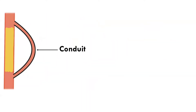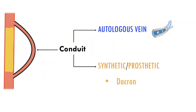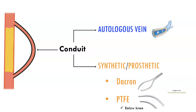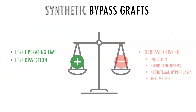The conduit or graft material used to create the bypass can be the patient's own vein, or synthetic materials like Dacron or PTFE. Dacron is a knitted or woven polyester material. PTFE is short for polytetrafluoroethylene, also known as Teflon. PTFE can be used below the knee, while Dacron is not. While synthetic grafts are readily available and avoid the extensive dissection needed to harvest a vein, they have an increased risk of infection, anastomotic pseudoaneurysms, neo-intimal hyperplasia, and thrombosis.